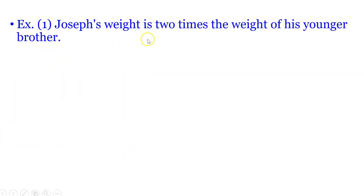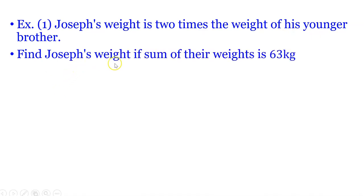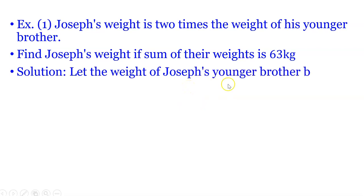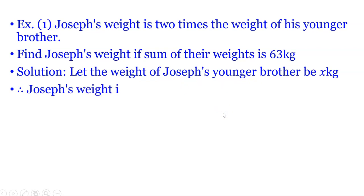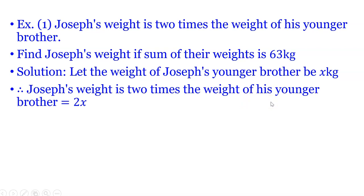Next example. Joseph's weight is 2 times the weight of his younger brother. Find Joseph's weight if the sum of their weights is 63. Solution: let the weight of Joseph's younger brother be x. Therefore Joseph's weight is 2 times the weight of his younger brother, which equals 2x.